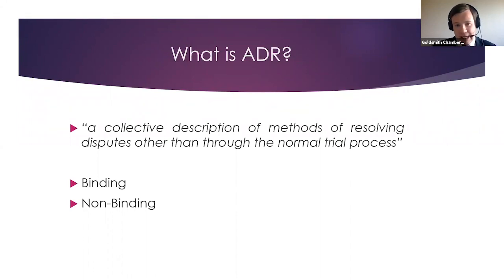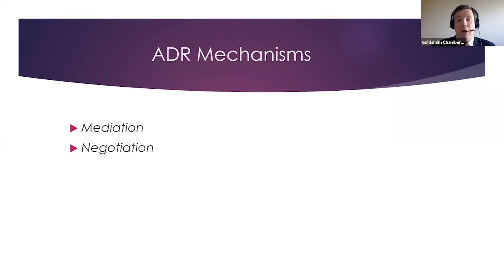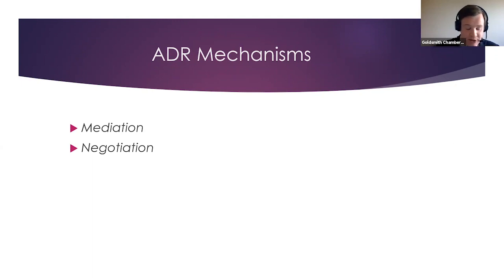So what ultimately are the different ADR mechanisms? Well the first is mediation and you're going to be hearing from Adam shortly in much more detail about exactly what mediation entails. Negotiation is an ADR method that most instructing solicitors will have engaged in prior to a case reaching the stage of litigation — that's where the parties try to reach an agreement on a settlement without any input from a third party. The third option is arbitration. Now these run very similar to a court; both parties will present their arguments to an arbitrator and the arbitrator will make a binding decision that both parties agree to be bound by.